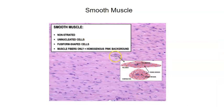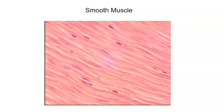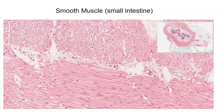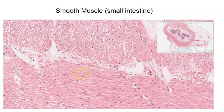Smooth muscle cells are shorter and spindle-shaped, with one nucleus per cell and no striations. In a sample from the small intestine muscular wall, you can see longitudinal sections of smooth muscle with no striations, spindle-shaped cells coming to a point, and a cross-sectional view showing the same tissue from another angle.